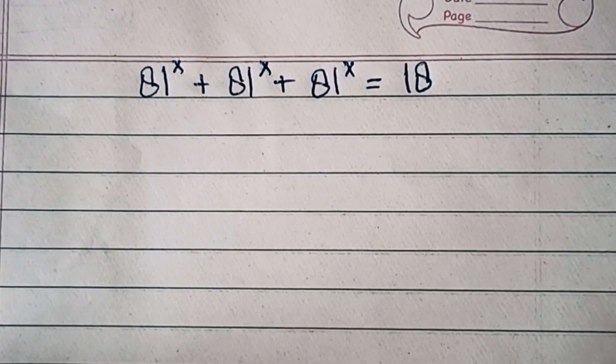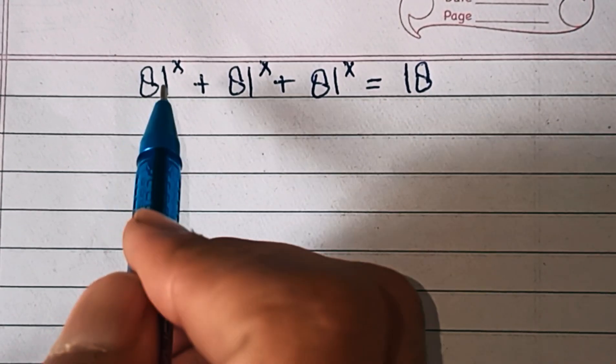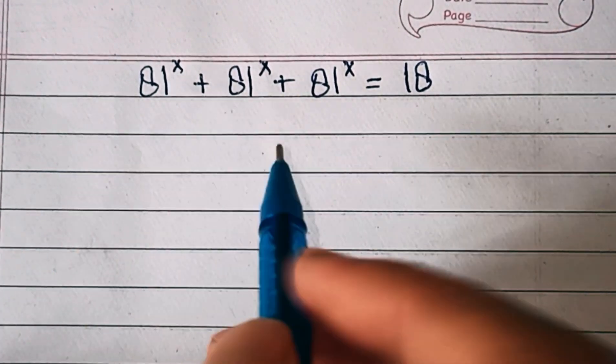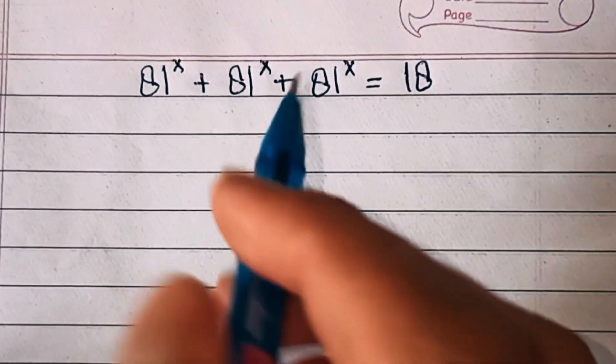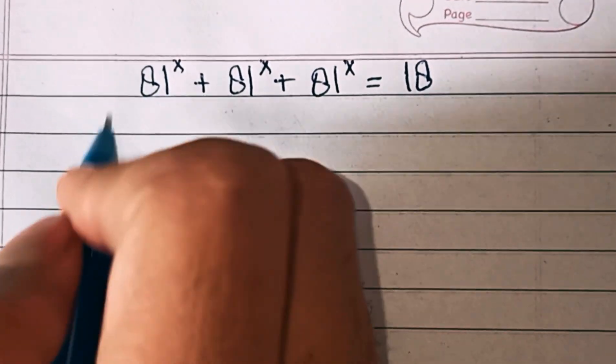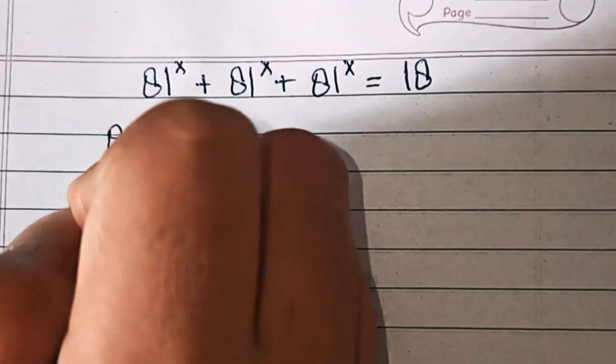First, 81 power x is common on the left-hand side, so we'll take this out of the bracket. We can write 81 power x, then bracket, then 1 plus 1 plus 1 equals 18.